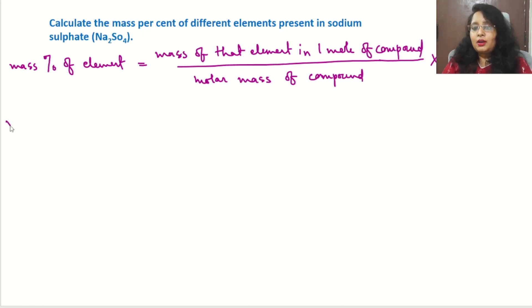So how to calculate molar mass of the compound Na₂SO₄? Here Na is twice in number, plus sulfur, plus oxygen which is four atoms. So we will write the atomic mass of sodium, that is 23, multiplied by 2, plus sulfur's atomic mass is 32, plus oxygen is 16 multiplied by 4.